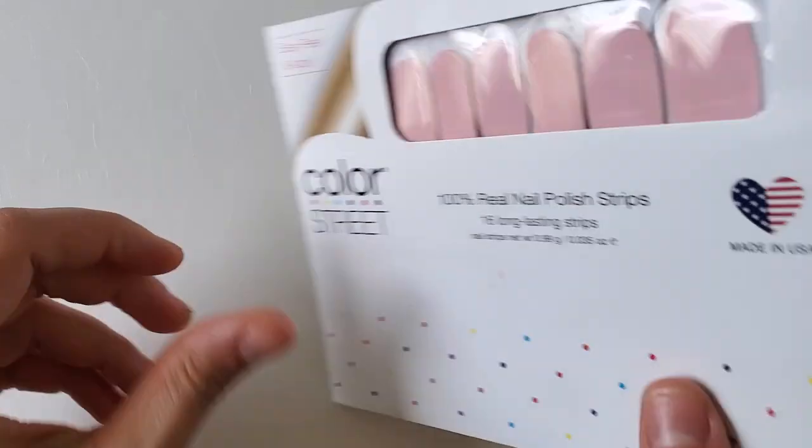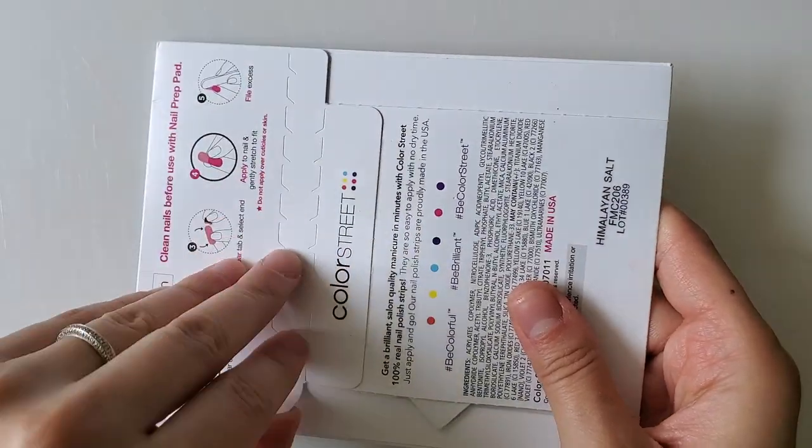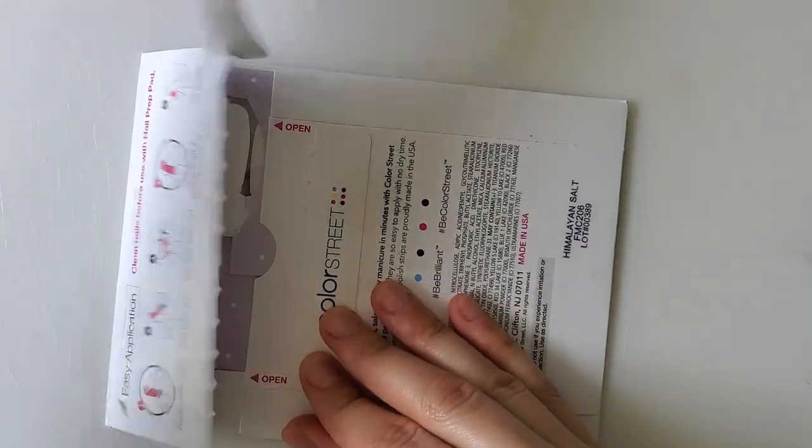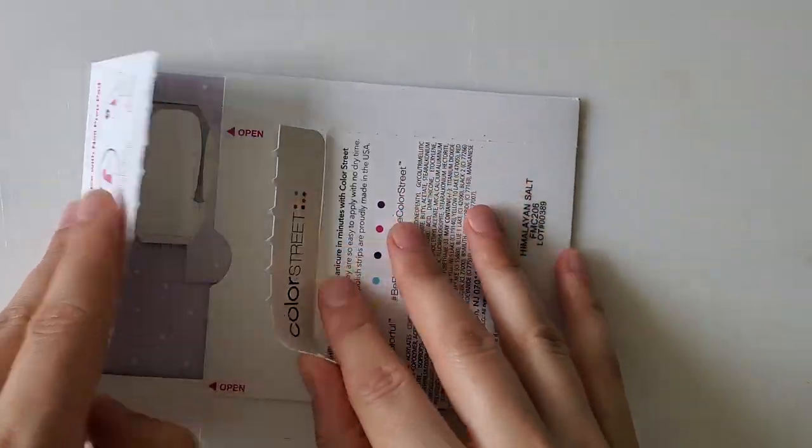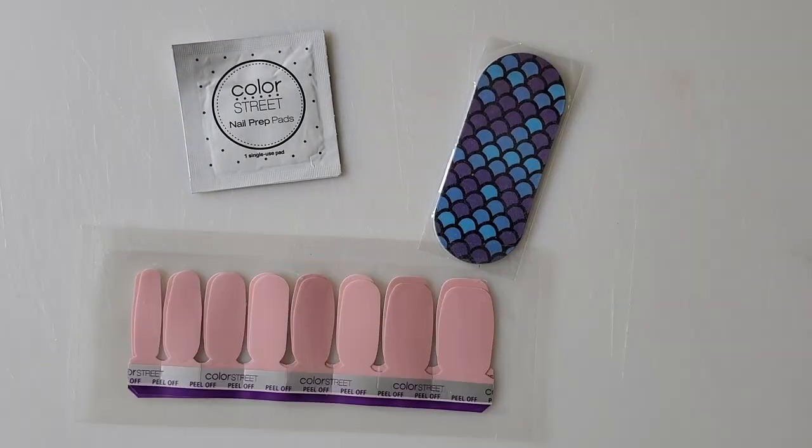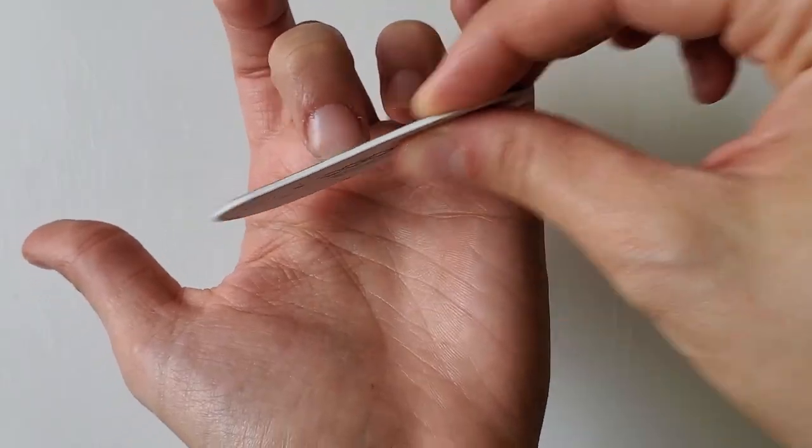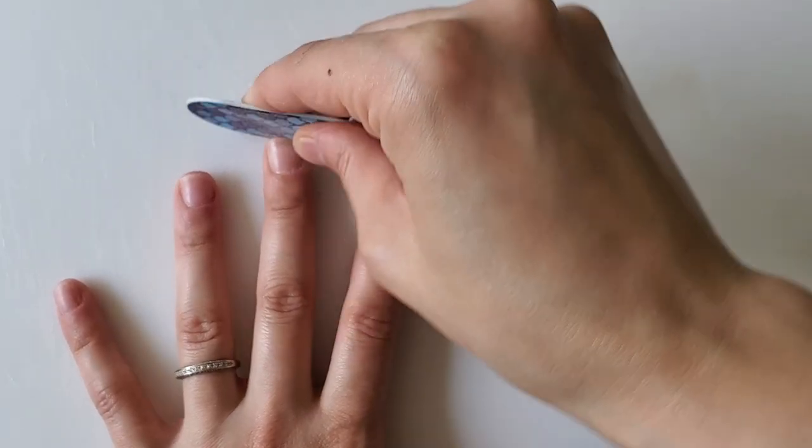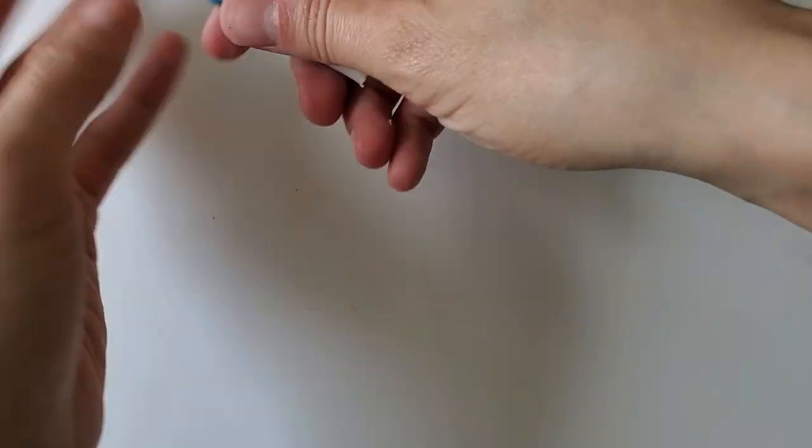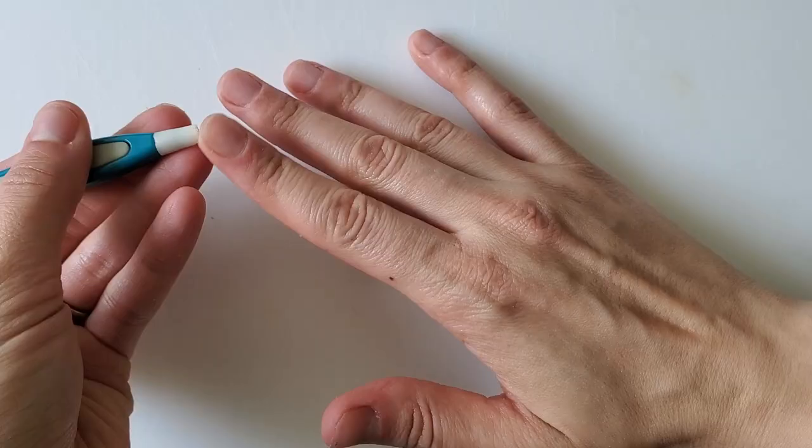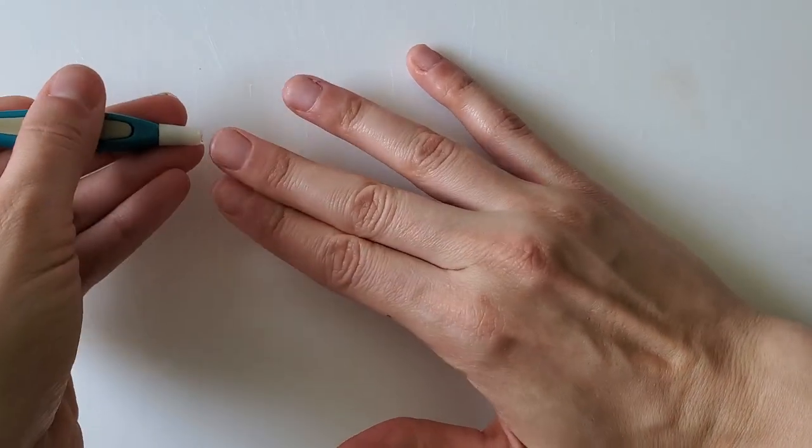And the moment you guys have all been waiting for, Color Street nail strips. Let's open this bad boy and check out what we have on the inside: alcohol wipes, a file, and the nail strips. I'm gonna start filing my nails. I am terrible at filing my nails. Honestly, I don't even know what I'm doing right now, but we're past that.